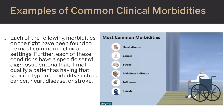This slide illustrates the commonly found types of morbidities, including the conditions of heart disease, cancer, and stroke. Each of these three are known as specific morbidities, as they are each associated with and defined by specific types of clinical signs and symptoms as discussed previously.